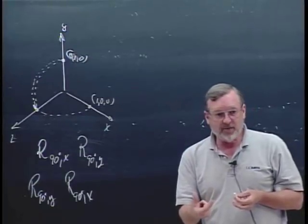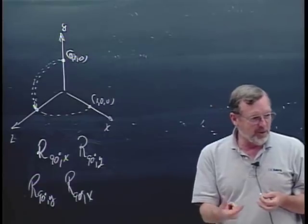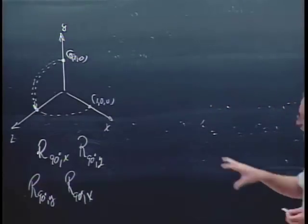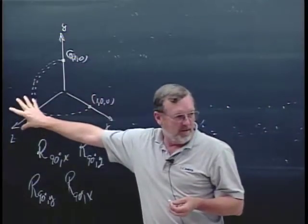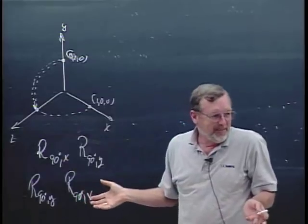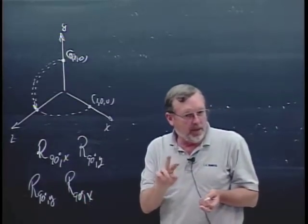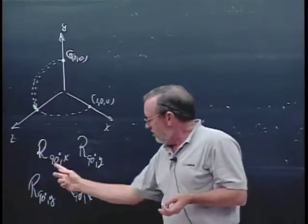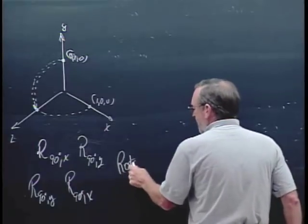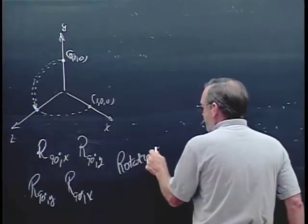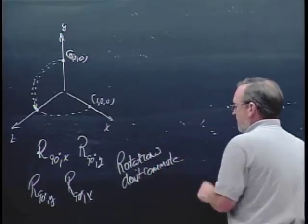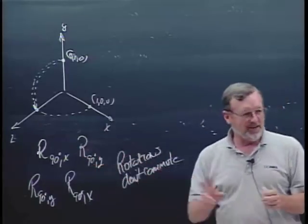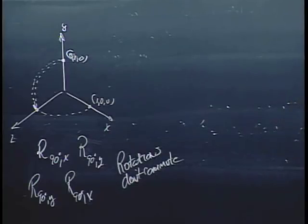Which is why in camera transforms you want to make sure to do your rotations in the correct order. If you don't, your points all end up in the wrong place and you're not going to see anything on your screen. It's a very common mistake. So rotations don't commute — the commutative property A times B equals B times A doesn't happen with rotations; you get different things out.